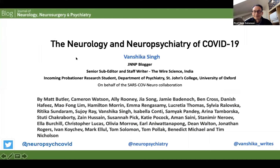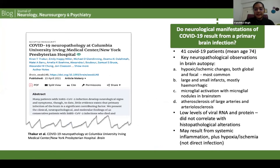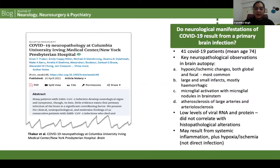Thank you for that introduction, Tom. As you all know, we have a weekly update at the JNNP blog documenting the updates in neurology and neuropsychiatry of COVID-19. Though the neurological and neuropsychiatric manifestations have now been very well cemented with the vast amount of literature, one critical question that has been doing the rounds is whether this infection is directly invading into the CNS. Work by Thakur and colleagues has given us good insights about what is really happening at the neuropathological level. In this study, they analyzed 41 COVID-19 patients in the autopsy setting and observed key neuropathological identifiers like hypoxic and ischemic changes, both global and focal.